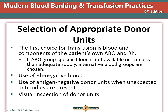Using RH positive for RH negative patients is only done if this is the only option, such as in a war zone or mass casualty event. You should select antigen-negative donor units when an unexpected antibody is present or if there is a history of an antibody. You must visually inspect the unit of donor blood for unusual qualities such as excessive air bubbles, dark black color, hemolysis, or anything that looks wrong, as this may indicate bacterial contamination.